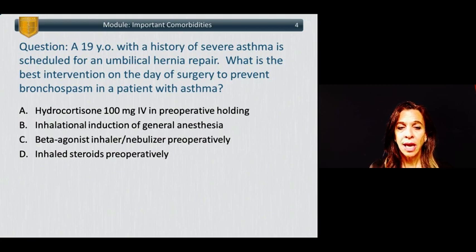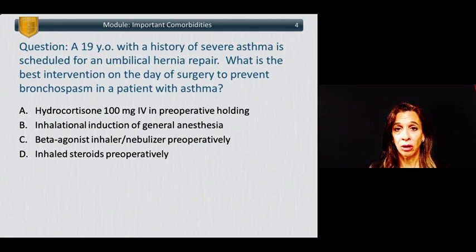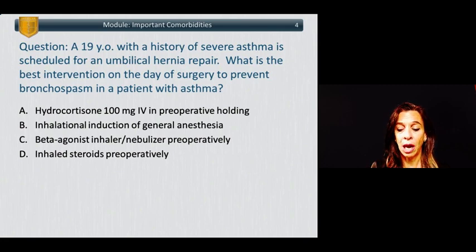Let's start with a question. A 19-year-old with a history of severe asthma is scheduled for an umbilical hernia repair. What is the best intervention on the day of surgery to prevent bronchospasm in a patient with asthma? A: giving hydrocortisone 100 mg IV in the preoperative holding area; B: an inhalational induction of general anesthesia; C: a beta-agonist inhaler or nebulizer preoperatively; or D: inhaled steroids preoperatively.